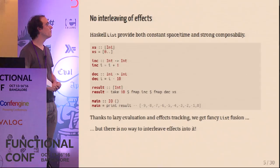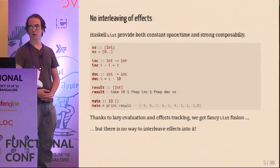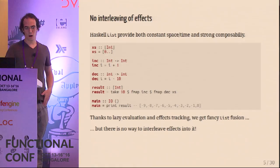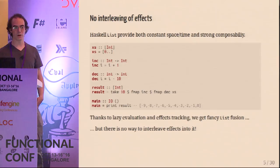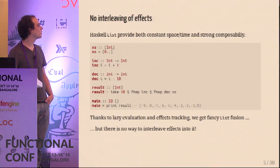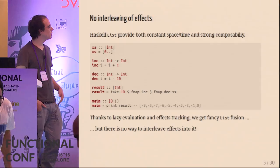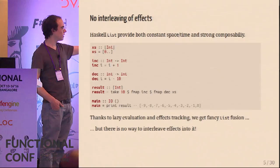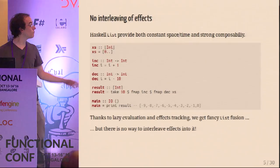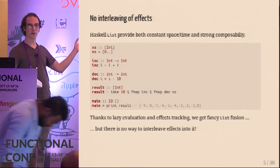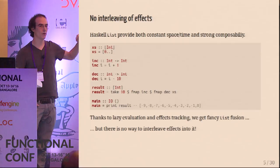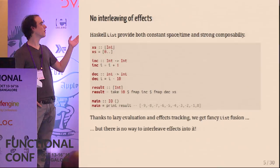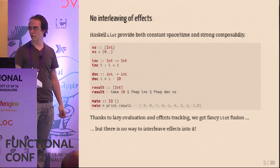If we remove the interleaving of effects, we can use Haskell lists, which provide both constant space-time and strong composability. Here's an example: we create an infinite list of integers. We have two functions - `inc`, which simply increments the integer by one, and `dec`, which decrements by 10. We take that list, fmap with `dec`, then `inc`, then take the first 10 elements. It works pretty well. Even though the list is infinite, the program terminates thanks to lazy evaluation, and it fuses the different phases together, giving us nice composability.